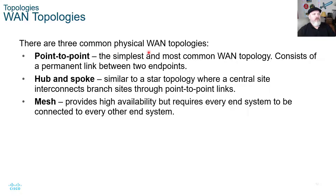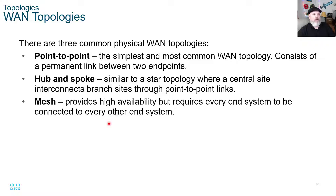There are three common physical WAN topologies. Point-to-point is the simplest and most common, consisting of a permanent link between two endpoints. Hub and spoke is similar to a star topology, with a central site interconnecting branch sites through point-to-point links. The mesh topology provides high availability but requires every end system to be connected to every other end system, making it more expensive due to the additional equipment required.